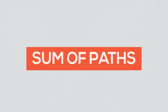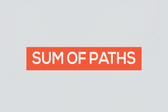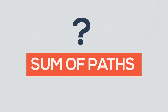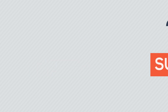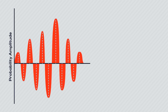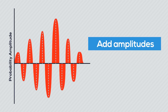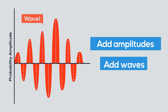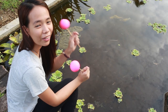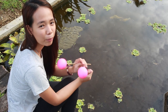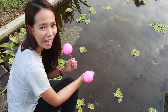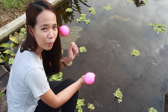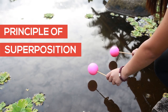How exactly do you sum paths up? What you add are their probability amplitudes. And since amplitudes are properties of waves, we should just be adding waves. Here we have the perfect principle telling us how to add waves: the principle of superposition.